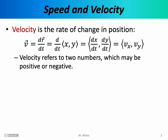Up until now we've been using the words speed and velocity synonymously. As it turns out there is a distinction between speed and velocity, and so over the next few slides we want to develop a more precise definition of velocity. Velocity is the rate of change in position — mathematically, it's the derivative of position with respect to time. When discussing motion in two or three dimensions, position itself can be two or three distinct numbers. In two dimensions, the position vector has an x coordinate and a y coordinate, each of which can independently depend on time. So when taking the derivative of a vector, we distribute the derivative: we take the derivative of the x component and separately the derivative of the y component, giving us the two components of velocity.